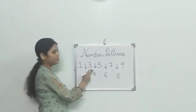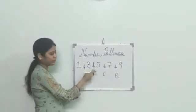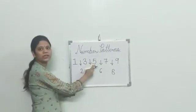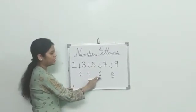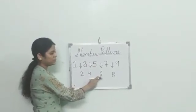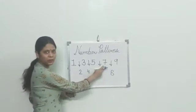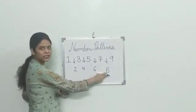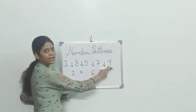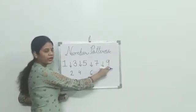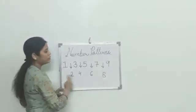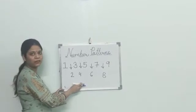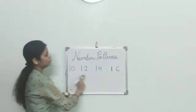We skipped 2 and got 3. Here we skipped 4 and got 5. Here we skipped 6 and got 7. And here we skipped 8 and got 9. So, which sequence follows? The same sequence. Have you understood it? Yes.